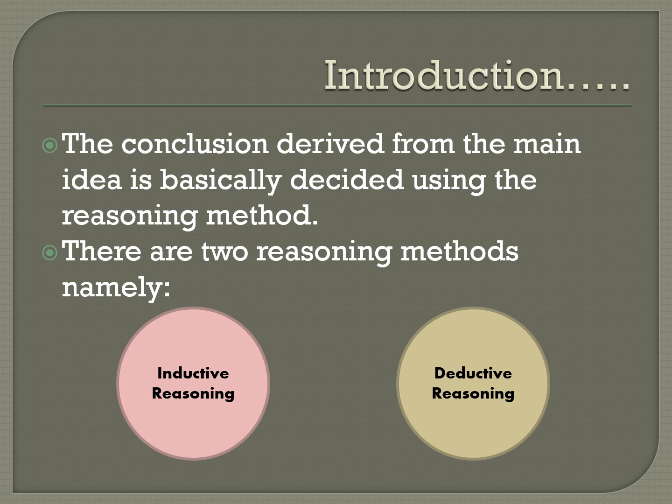For example, if you read a passage, you know what the main idea is. The main idea talks about how we can improve English. The first paragraph talks about the first way to improve English, which is by watching English movies. That main point is elaborated and supported with examples, evidence, and so on. In order for us to decide what is the conclusion of the whole paragraph or the whole passage, we need to use the reasoning methods.